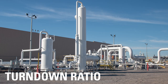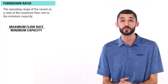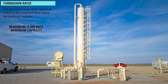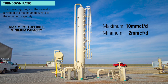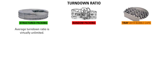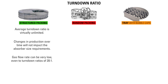The turndown ratio of an absorber is the operating range of the vessel as a ratio of maximum flow rate to minimum capacity. For example, if a tower is rated at a maximum of 10 million cubic feet per day and a minimum of 2 million cubic feet per day, the turndown ratio is 5 to 1. With structured packing, the average turndown ratio is virtually unlimited. Changes in production over time will not impact the absorber size requirements. As long as the glycol is fully coating the packing surface, the gas flow rate can be very low, even to turndown ratios of 20 to 1.